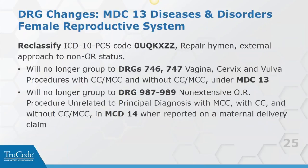In MDC13 - the female reproductive system - they reclassified the PCS code for repair of the hymen, external approach, from OR status to non-OR status. This means that if you have this procedure in MDC13, it's no longer going to group to DRGs 746 and 747, which are procedure DRGs. And if you're in MDC14 - so if the patient is pregnant - they're no longer going to group to DRGs 987 and 989. DRGs 987 and 989 are where diagnoses and procedures are unrelated - so they'll be removed from there because this will no longer be considered a surgical procedure.